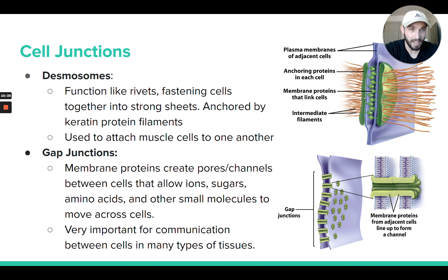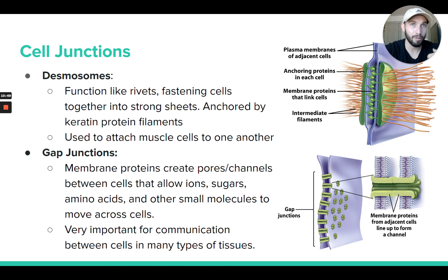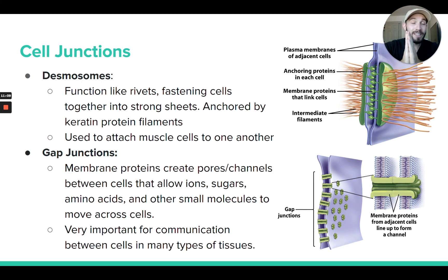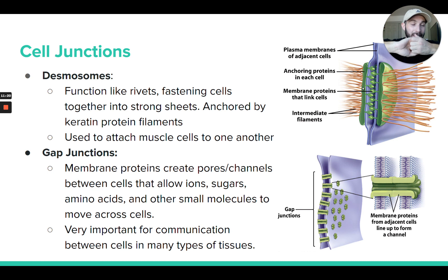Then there's structures called desmosomes. Desmosomes are these much larger protein structures that anchor cells together. They're a lot larger than tight junctions. They're usually compared to like the rivets you see in two pieces of sheet metal that are fused together — and it holds the two cells together very strongly. Desmosomes are these very, very strong anchored connections between adjacent cells — there's a cell over here and a cell over here and there's this huge protein complex holding them together. There would probably be many of these holding those two cells together.